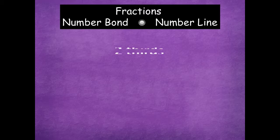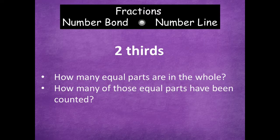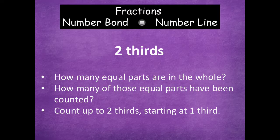So we're talking about number bonds and fractions on a number line. If I have two-thirds, how many equal parts are in the whole of two-thirds? One equal part, two equal parts, three equal parts for the whole — three, because we're separating something into thirds. So there are three equal parts. How many of those equal parts have been counted? Our fraction is two-thirds, so two equal parts have been counted so far.